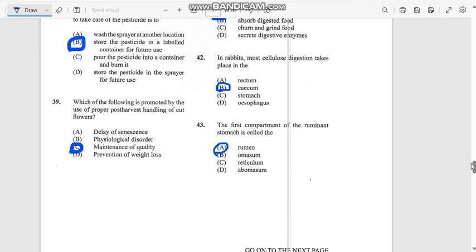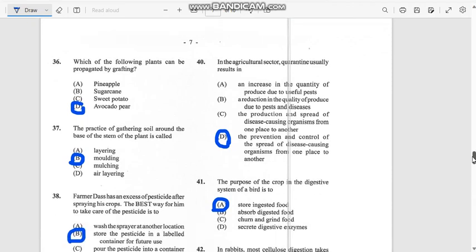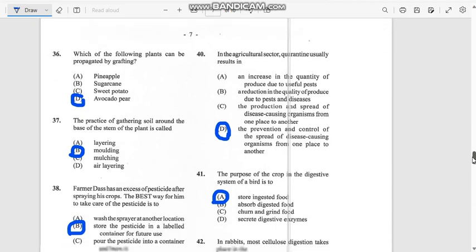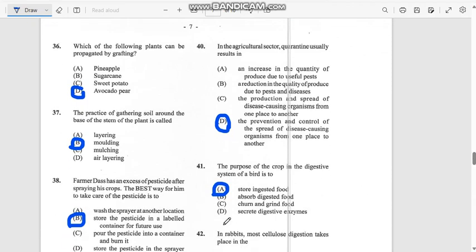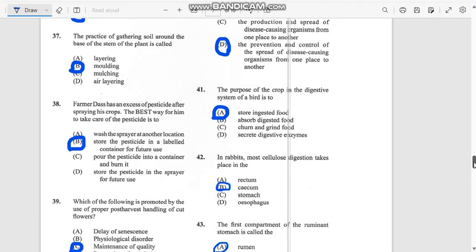Number 40: In the agricultural sector, quarantine usually results in the prevention and control of the spread of disease-causing organisms from one place to another.